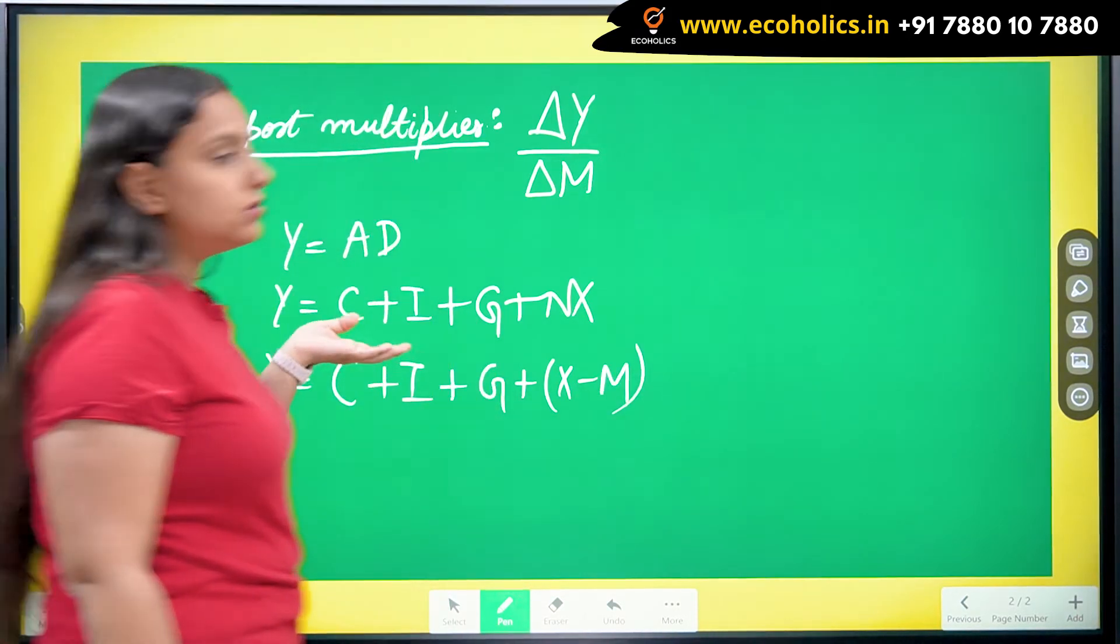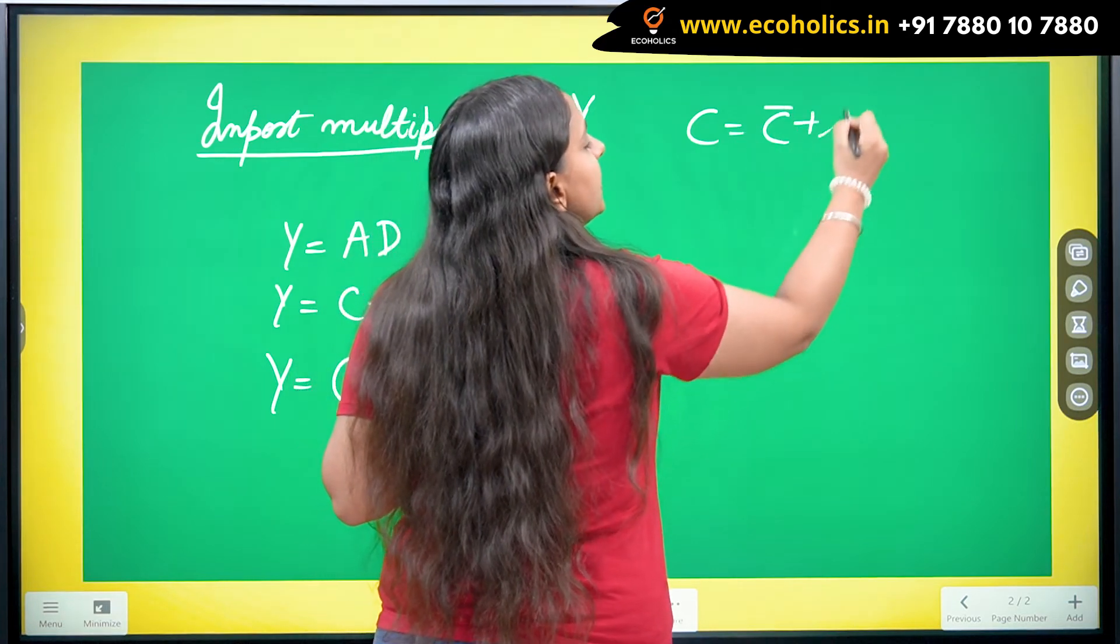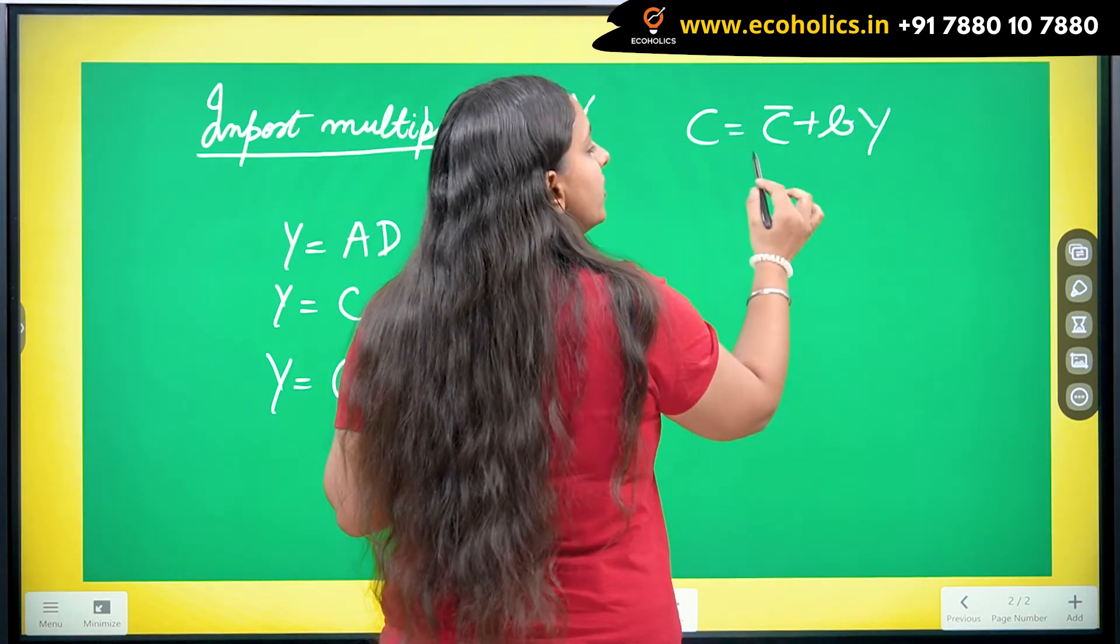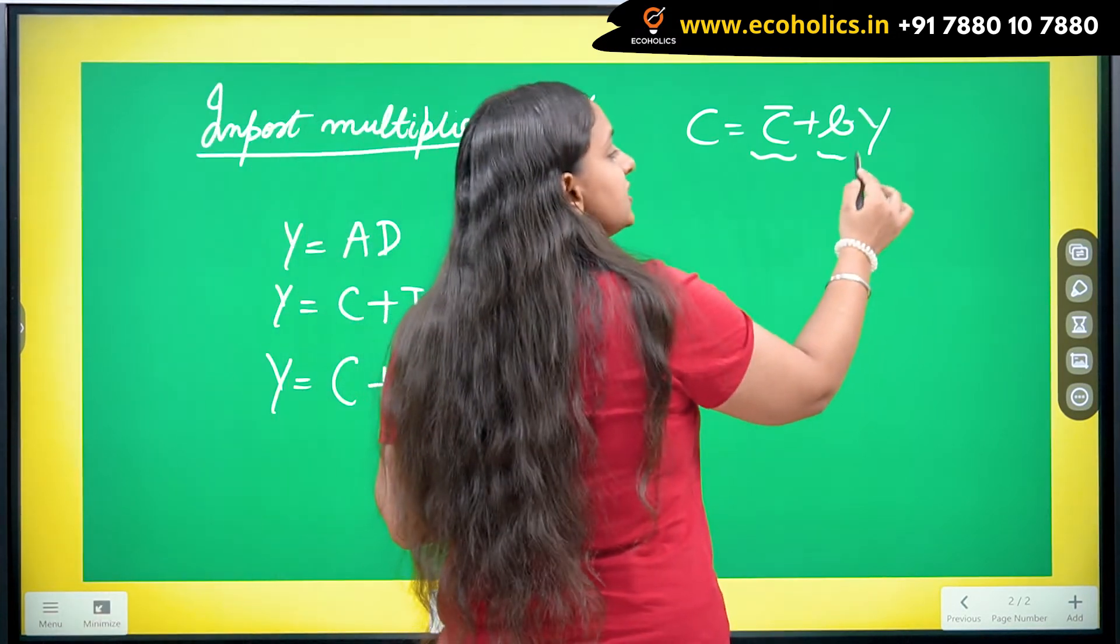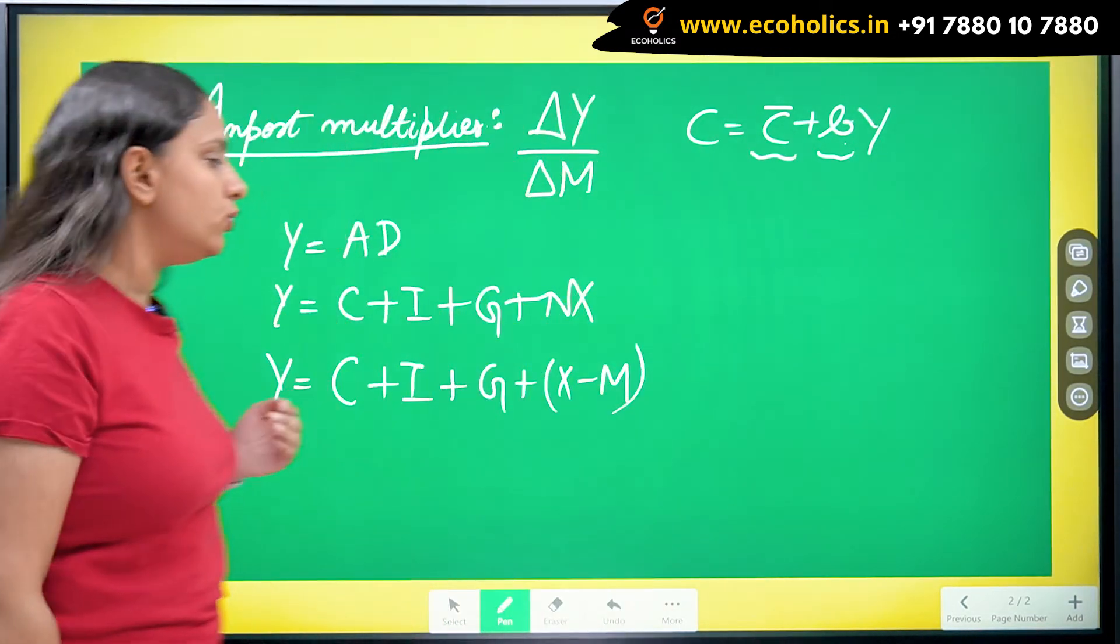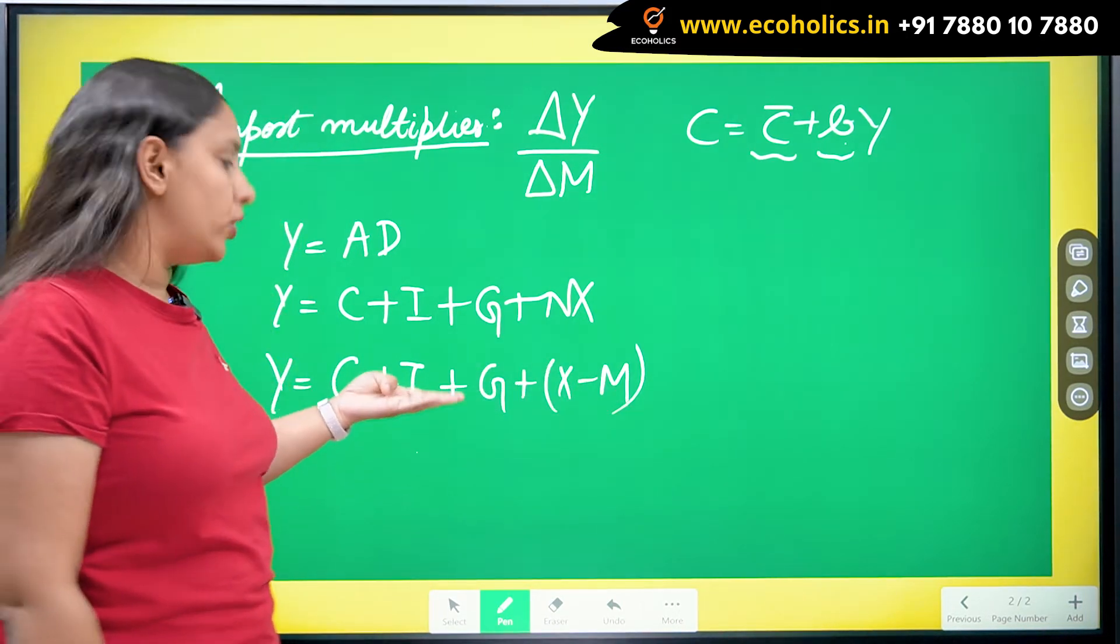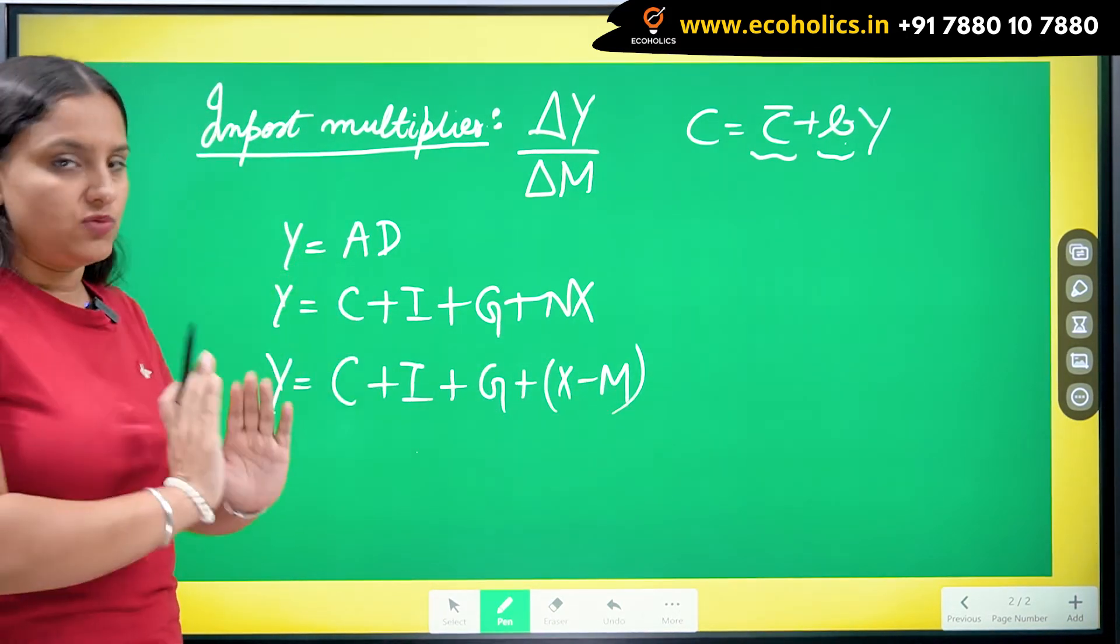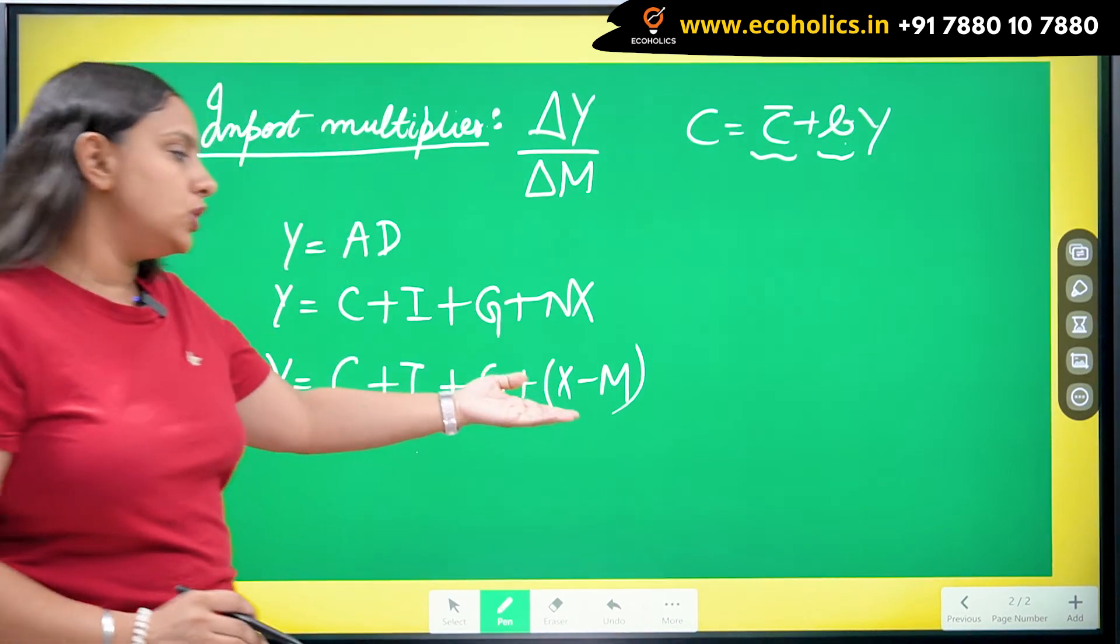When it comes to consumption, the C, consumption function takes the form C bar plus B Y. Over here, C bar is my autonomous consumption, whereas B is my marginal propensity to consume. Similarly, I would be taking I as autonomous, a fixed value. G in the same way, autonomous exports also.